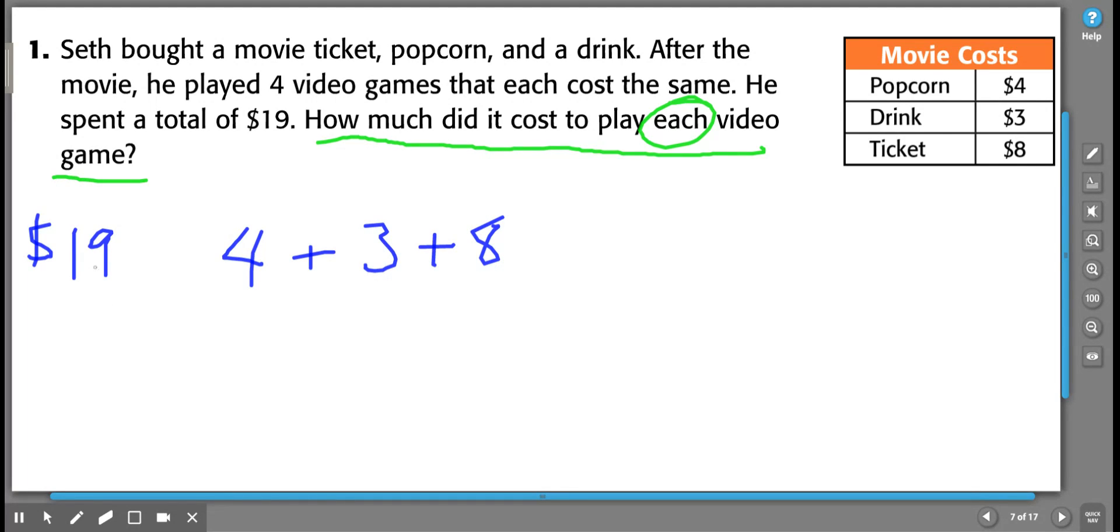Well, I want to take $19 and subtract $4 plus $3 plus $8. And then because I want to know how much each of those four video games cost to play, I'm going to have to divide by four.